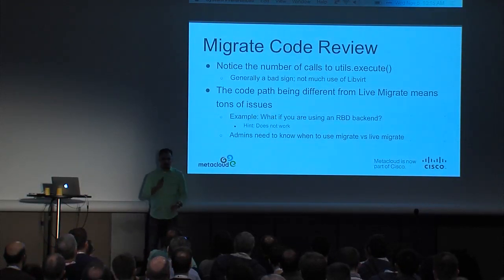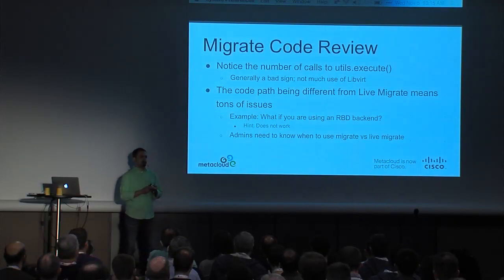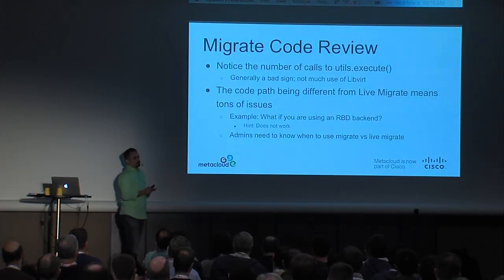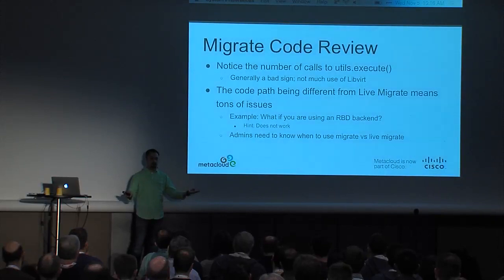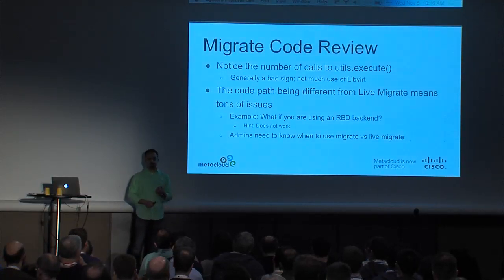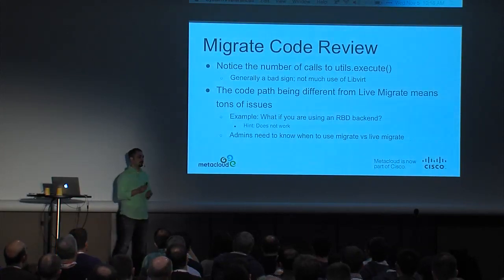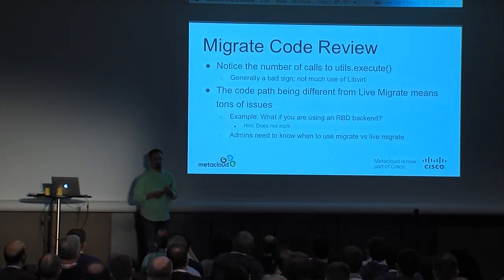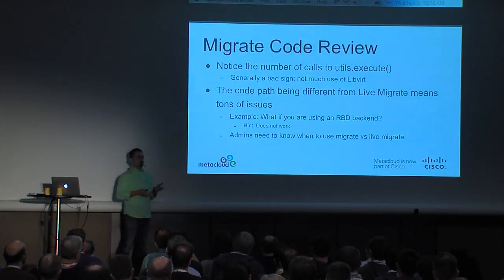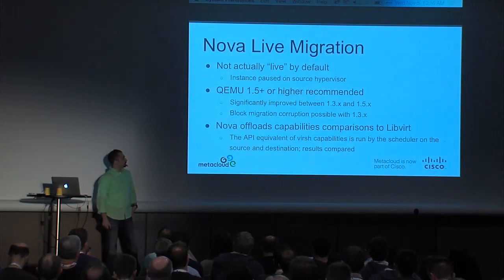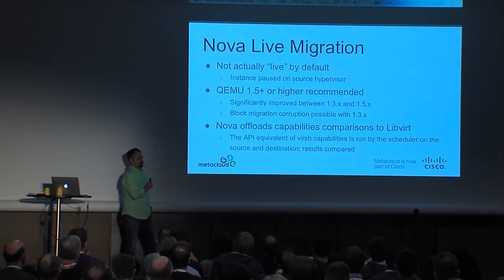There's a shared storage check that exists for live migrate and a completely separate one for the standard migrate function. One of the biggest areas of confusion is why there are two — why is there a migrate and a live migrate? Live migrate should probably just fall back to doing the right thing; that isn't the case today. Live migrate is not live by default, and that's by configuration. If you deploy Nova today without changing anything and do a live migrate, you're actually pausing the instances.